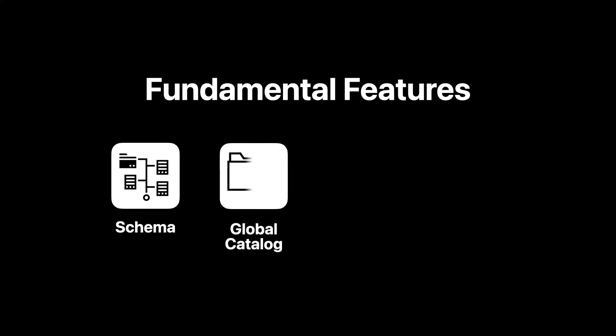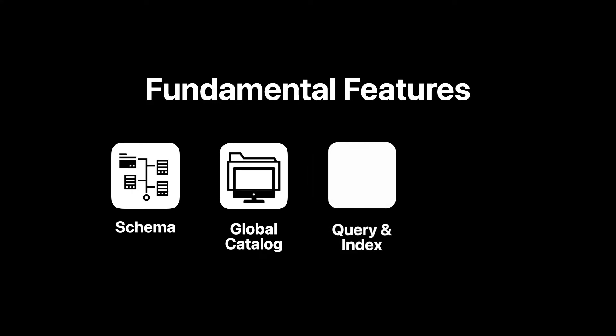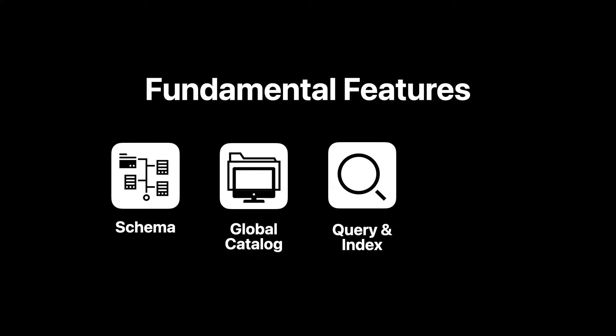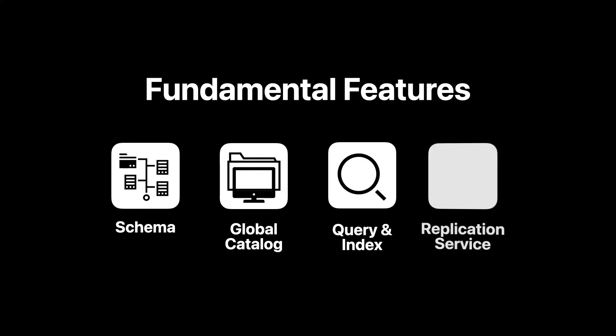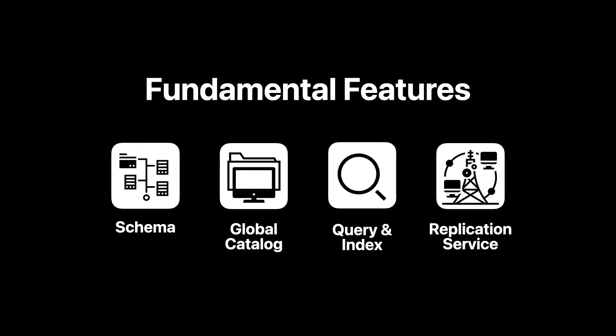A few of the fundamental features and capabilities of Active Directory are: a Schema, which classifies the objects and attributes within the directory; a Global Catalog that contains thorough information about every object in the directory; a Query and Index structure that allows users, admins, and applications to find directory info; and a Replication Service that broadcasts directory data throughout the network.